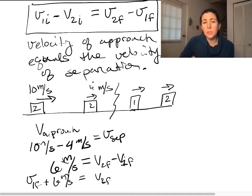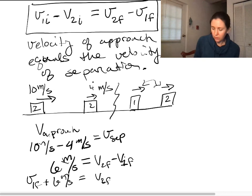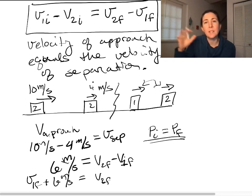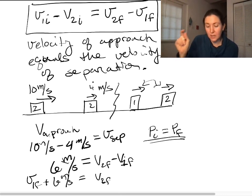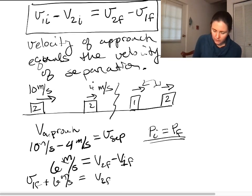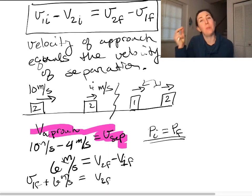At this point, if you don't know one of the final velocities, you still need another equation — this is where conservation of momentum comes in. If we know the masses, we can set initial momentum equal to final momentum and use that to find one final velocity, then plug it in to find the other. The big takeaway is: the velocity of approach equals the velocity of separation. The relative speeds initially equal the relative speeds finally.